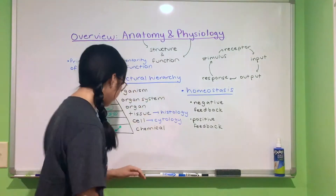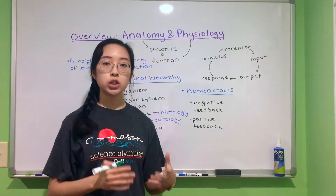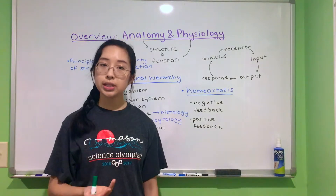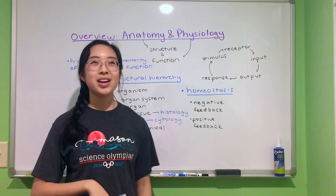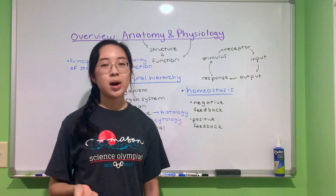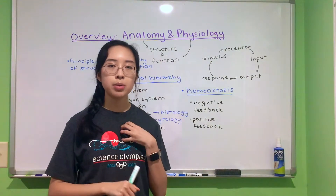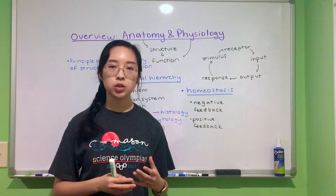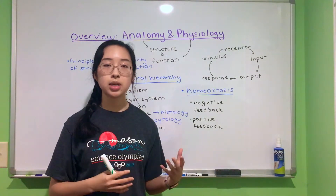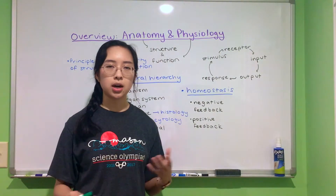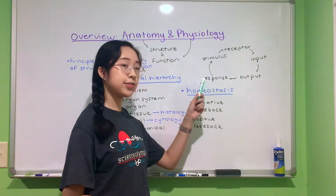Finally, we're going to talk about homeostasis. Homeostasis is the ability of an organism to maintain a general internal balance despite external changing factors. For example, where I live in Ohio the weather is extreme — up to 90 degrees in summer and sub-freezing in winter — yet our internal body temperature stays pretty much constant throughout the year. In fact, if our temperature deviates by even a few degrees, that could be life-threatening.